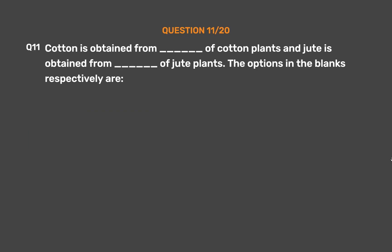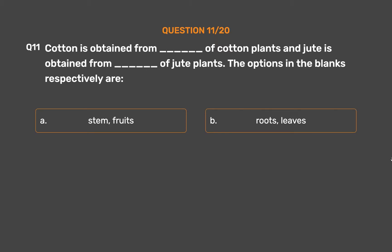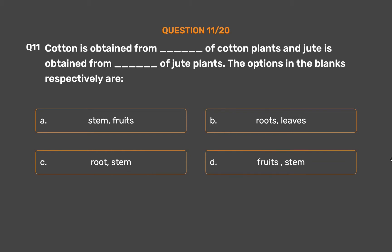Question number 11. Cotton is obtained from __ of cotton plants and jute is obtained from __ of jute plants. Option A, Stem and Fruits; Option B, Roots and Leaves; Option C, Root and Stem; Option D, Fruits and Stem.